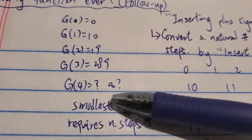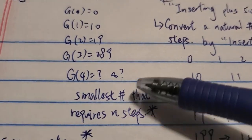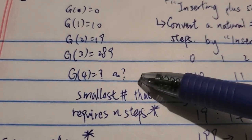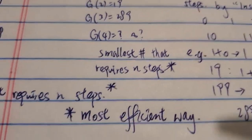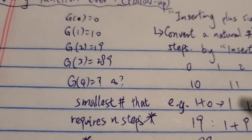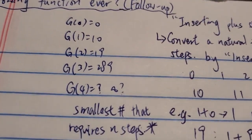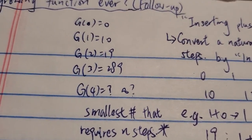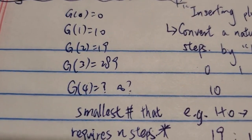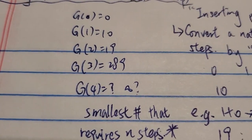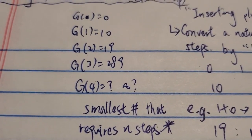A lot of people have been disagreeing because they said g4 is kind of undefined — there's no number that requires four steps using the most efficient way. So it's not the fastest-growing function. But I can tell them: you can define the function differently, change the definition a little bit, redefine it, and make it the fastest-growing function.